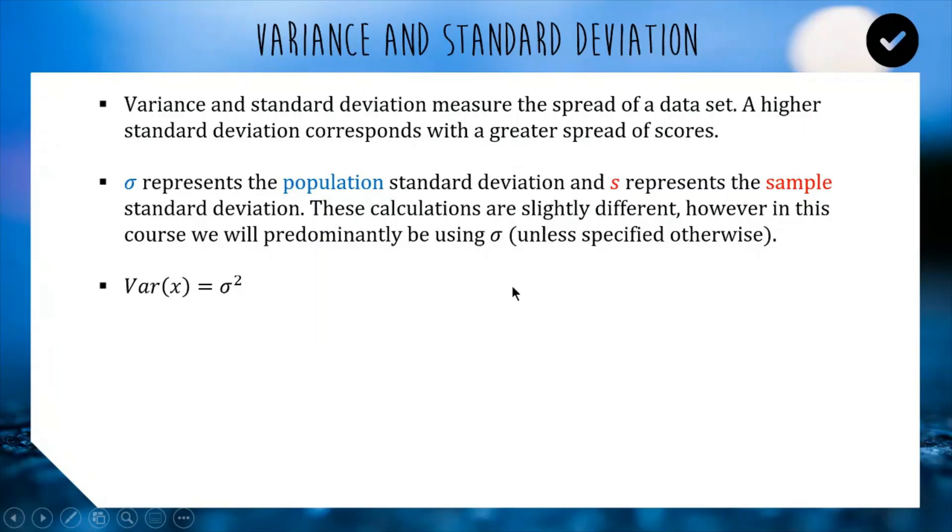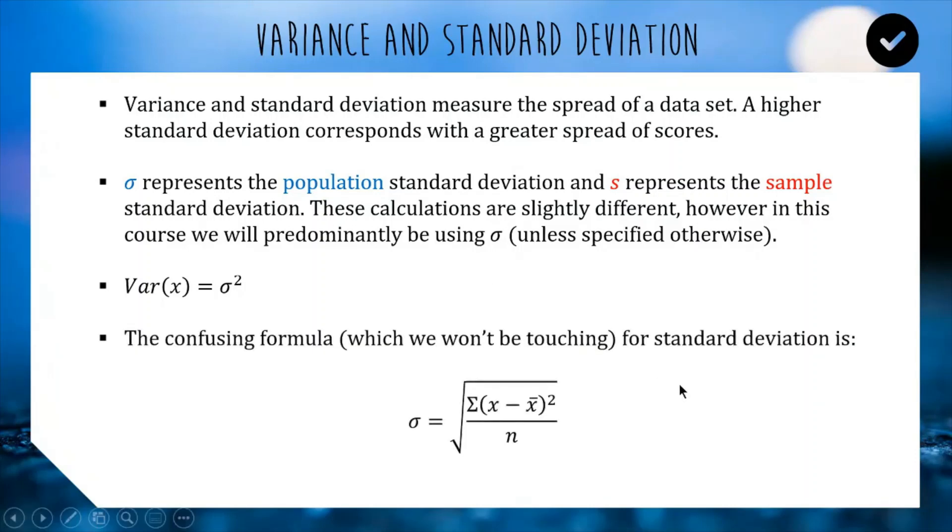Now, there is a way of calculating standard deviation by hand. It looks like this. It's pretty overwhelming and very time-consuming. You need to find the distance between each score and the mean. You need to square those distances. You need to add them all up. That's uppercase sigma for sum. So you're summing together all the squared distances from each score to the mean, dividing by the number of scores, and taking the square root. Very confusing. Very time-consuming.